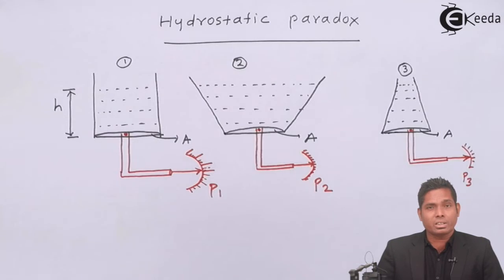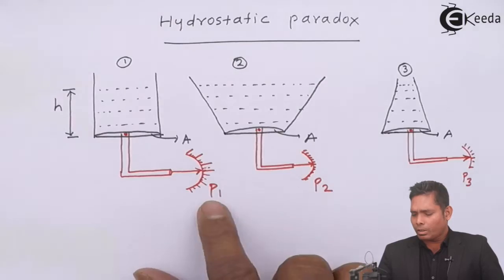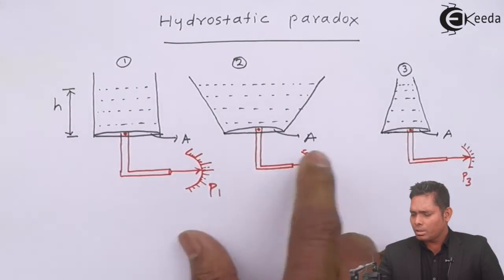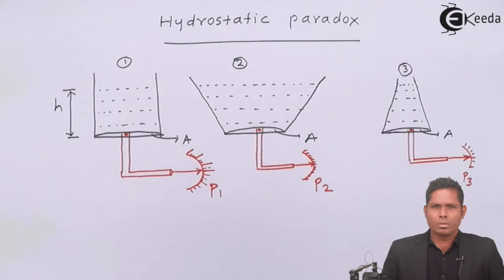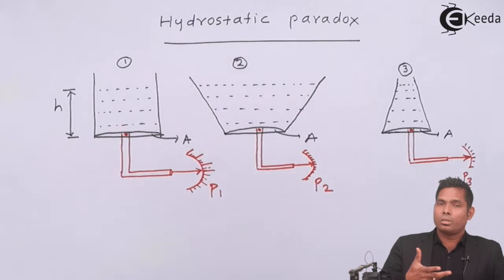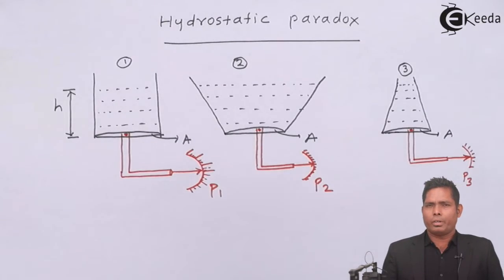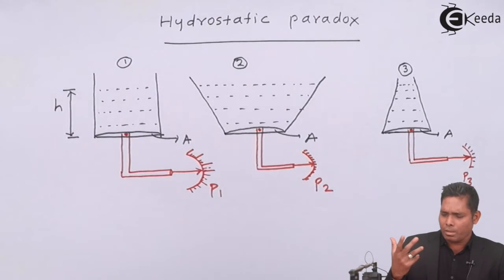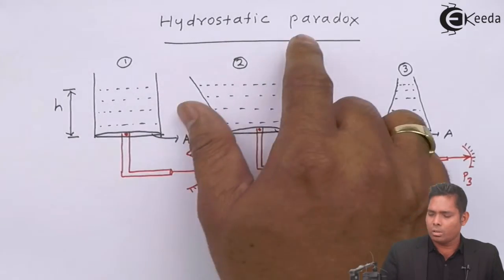But surprisingly, the result comes out to be very, very different. The result comes out to be that the pressure at the bottom of each of these vessels is found to be the same. Why is the pressure the same at each point? This is not what we expected — this is not the normal way to think. This is an abnormal result. Therefore, this is called a paradox.